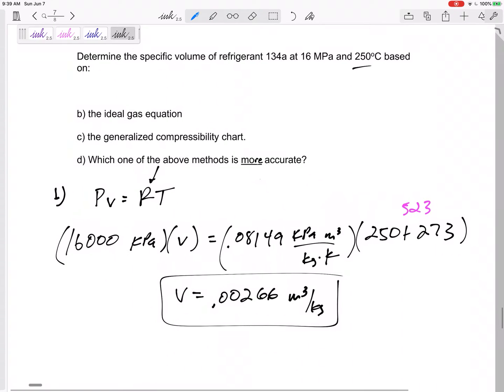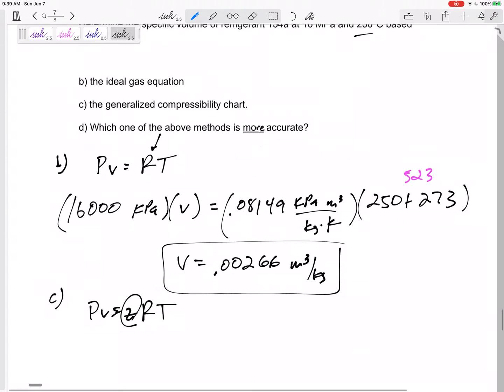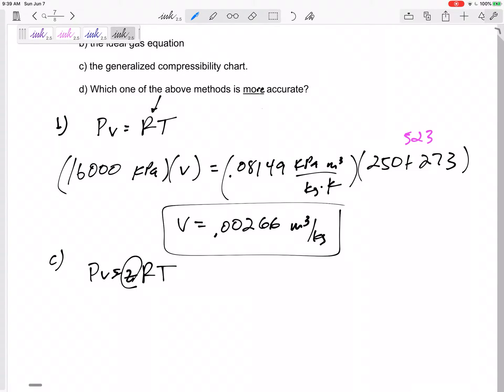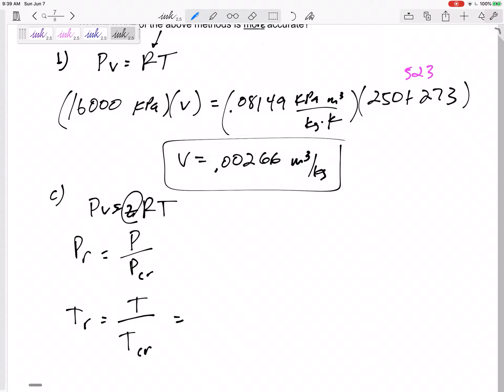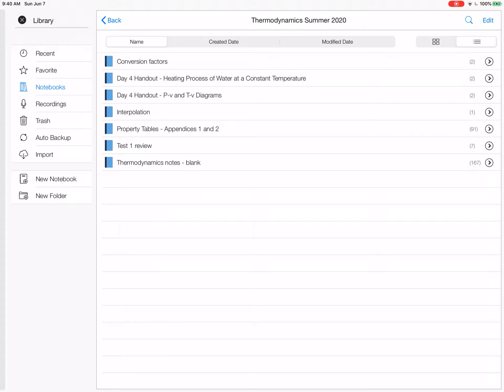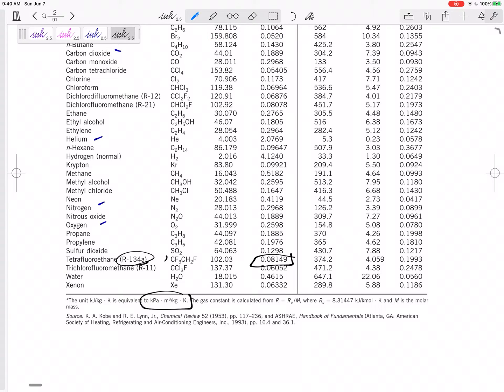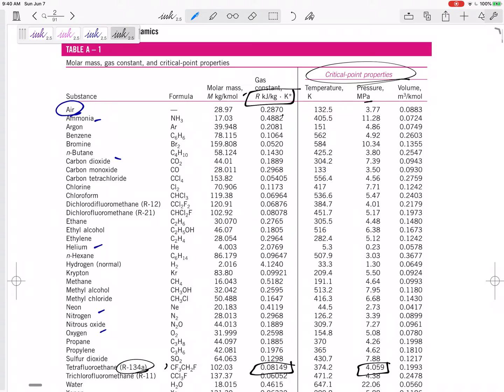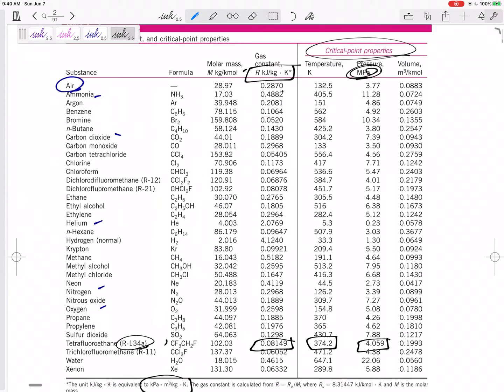Okay, but part C is using PV equals ZRT, using this compressibility factor from the compressibility chart. In order to read that chart, I need Pr and Tr. What is Pr and Tr? Reduced pressure, reduced temperature. That is the current pressure divided by the critical point pressure, and the current temperature divided by the critical temperature.